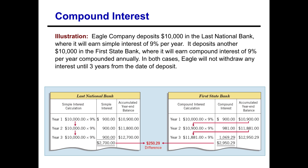At Last National Bank, each year they earn nine hundred dollars in interest because they're earning nine percent on the principal only. So at the end of year two they have eleven thousand eight hundred dollars — the ten thousand dollar principal plus eighteen hundred in total simple interest. At First State Bank paying compound interest, year one is the same. But in year two they earn nine percent on ten thousand nine hundred dollars, including both principal and the interest from year one. So at the end of year two they have eleven thousand eight hundred eighty-one dollars — eighty-one dollars more than under simple interest.